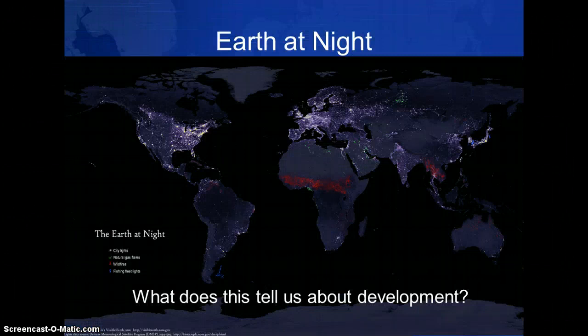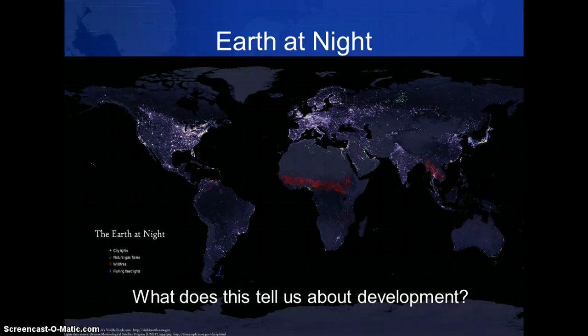This is a composite satellite image of the Earth at night. What does it tell us about development? A lot, I think. Note the areas lit up at night. While Europe, the United States, and Japan are clearly visible, much of the global south remains in the dark, both figuratively and literally.